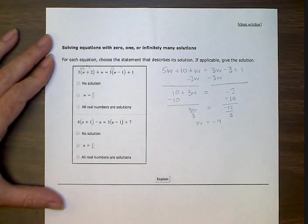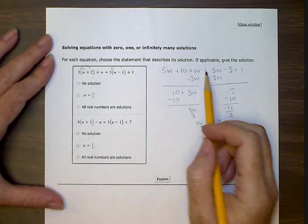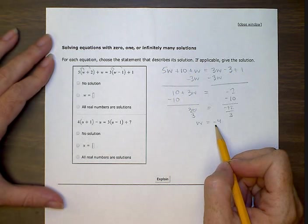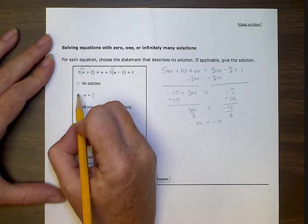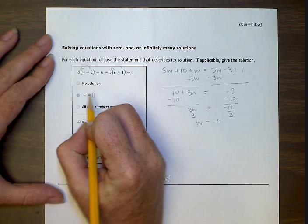So now we know that this statement is true only for one case. And that is where w equals negative four. So we have this answer. w equals negative four.